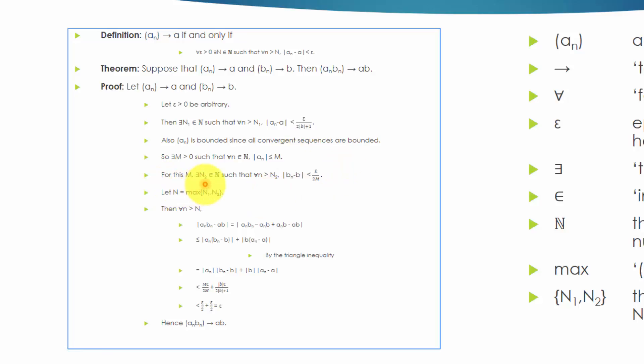For this big M, there exists a number N2 in the natural number set big N, such that for all small n greater than N2, the absolute value of B-N minus B is less than epsilon over 2 times M.